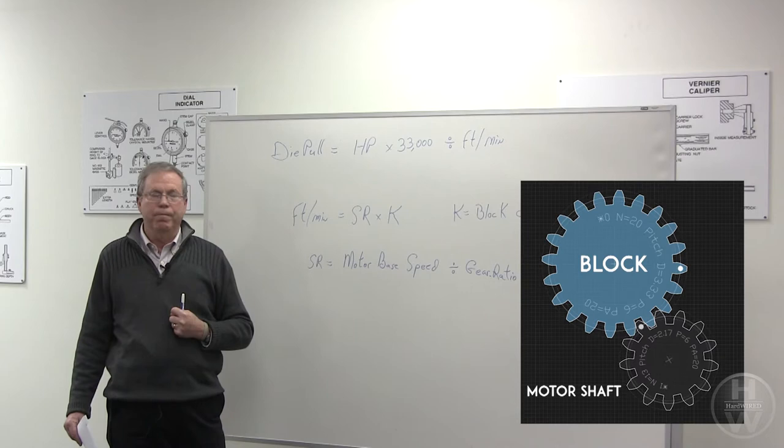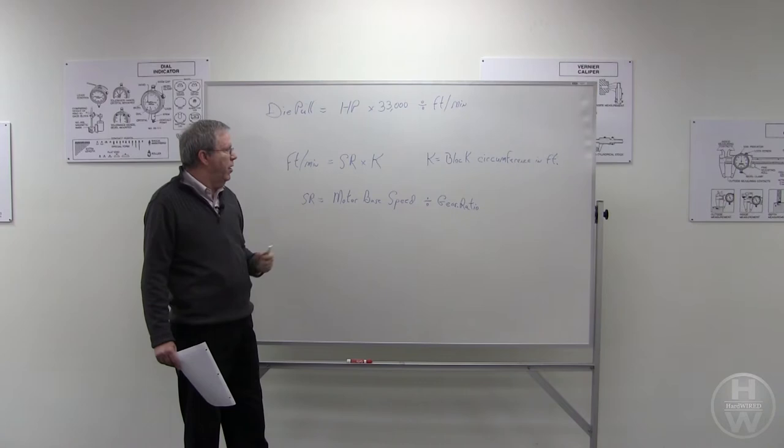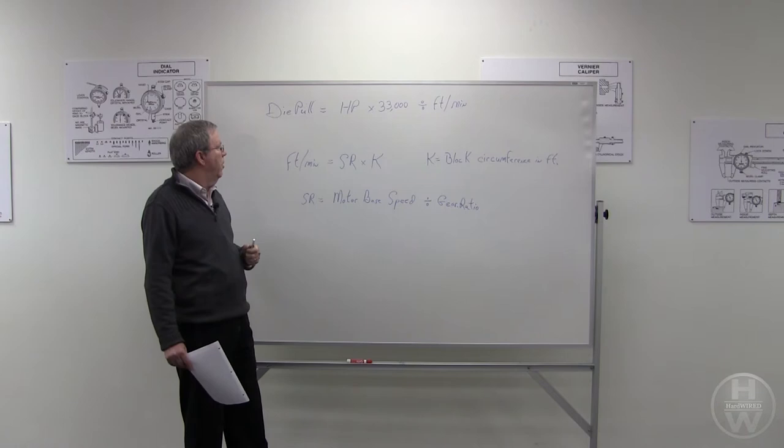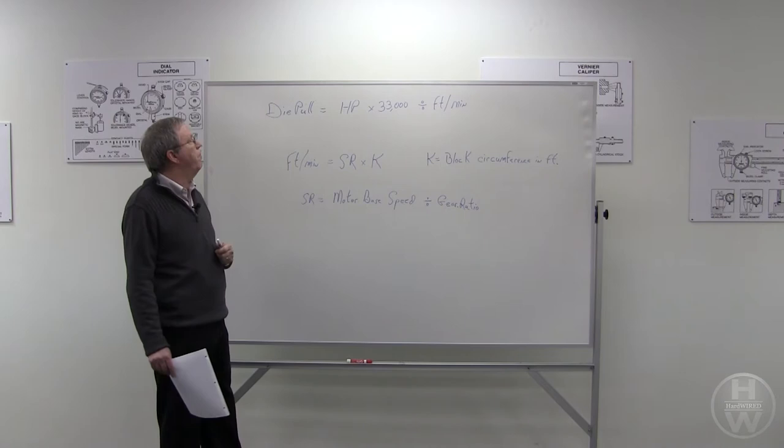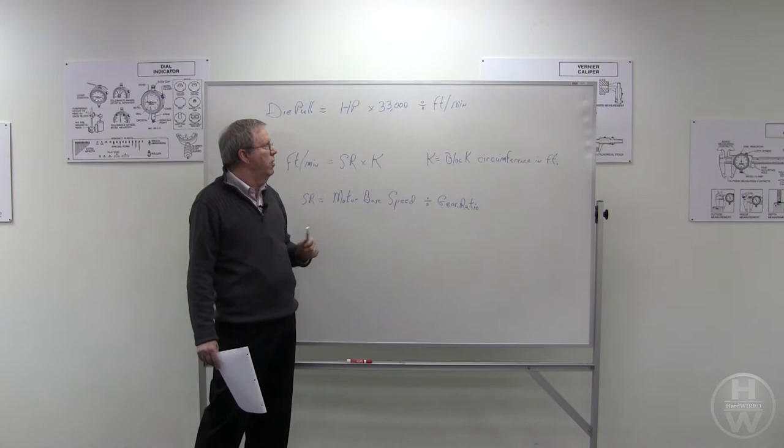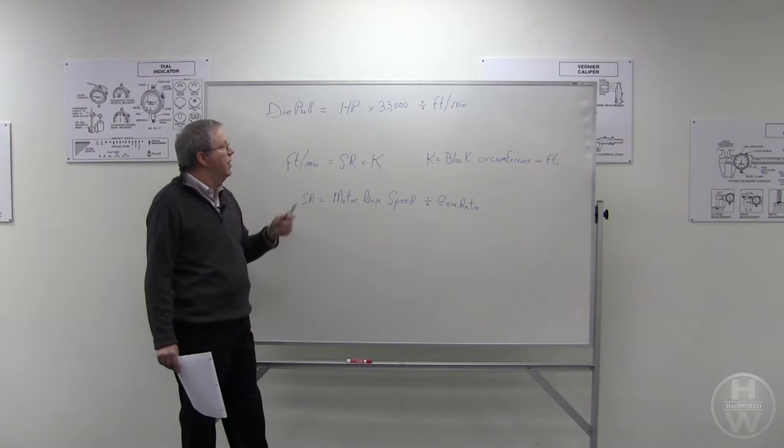So once we know the gear ratio, we can divide the motor base speed, which will give us shaft revolutions. We multiply that shaft revolutions times the block circumference in feet and we now have feet per minute. Once we know feet per minute, we can come up to the top formula: take horsepower times 33,000 divided by our feet per minute, and that gives us die pull.